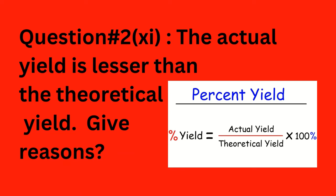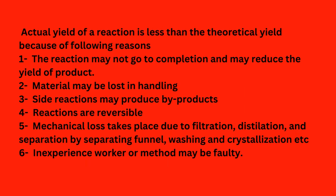Question number two, part eleven: the actual yield is lesser than the theoretical yield — give reasons. The actual yield of a reaction is less than the theoretical yield because: (1) the reaction may not go to completion and may reduce the yield; (2) material may be lost in handling; (3) side reactions may produce byproducts; (4) reactions are reversible; (5) mechanical loss takes place due to filtration, distillation, separation by separating funnel, washing, and crystallization; (6) the worker may be inexperienced or the method may be faulty.